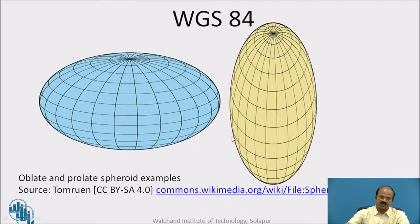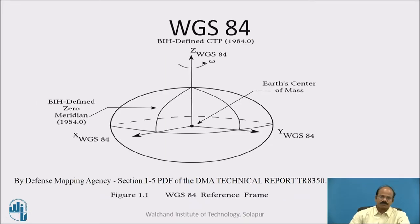Here you can see the shape of this particular sphere — it is an ellipsoid, while the conventional form is a spheroid. This is oblate and this is prolate. The oblate form is the one used in the world geographic coordinate system. The classical coordinates — latitude, longitude, and altitude — in reference to the WGS84 system have been shown here.